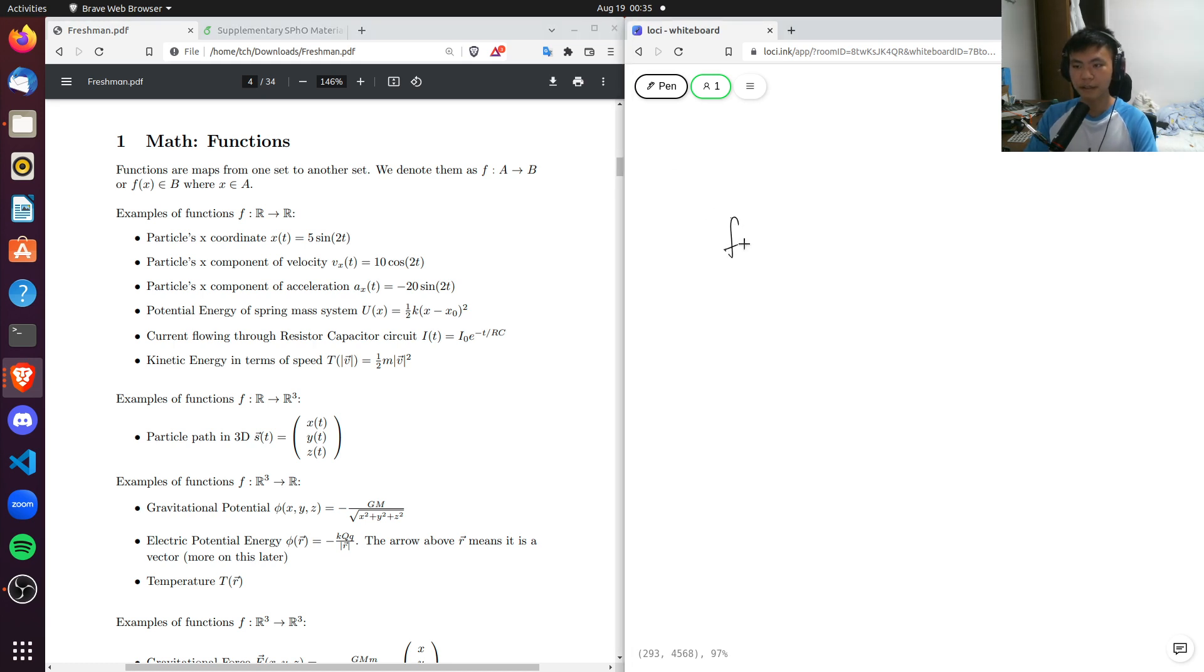In general, functions are just a map from a set A to a set B. These sets can be anything. They can be, for example, real numbers. They can be triplets of real numbers which we call R3, three copies of R. Or they can even be complex numbers or even more exotically, if you go to theoretical physics, they can be the set of points on the surface of a donut which we often call the torus, T2. What I want you to realize is that for most of physics, at least for undergraduate physics and physics olympiad, we'll be dealing with these two sets.